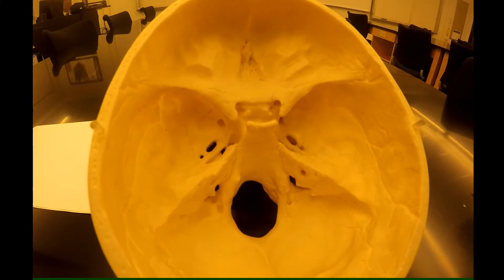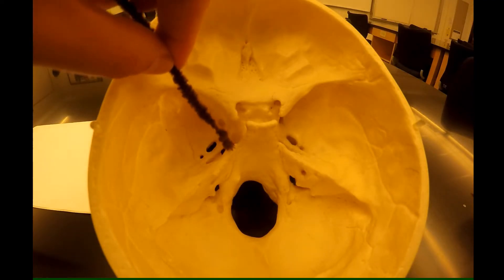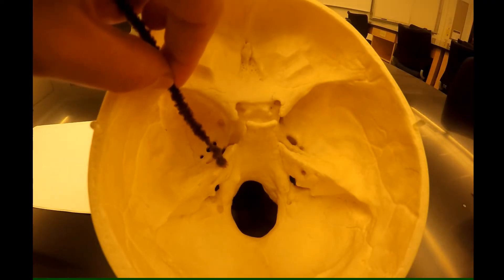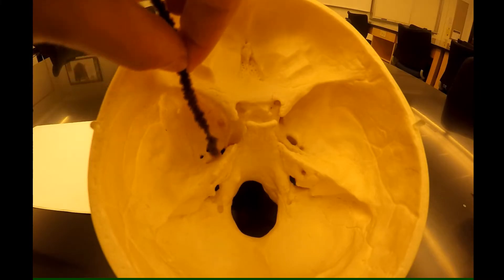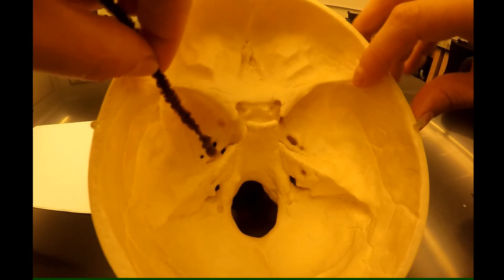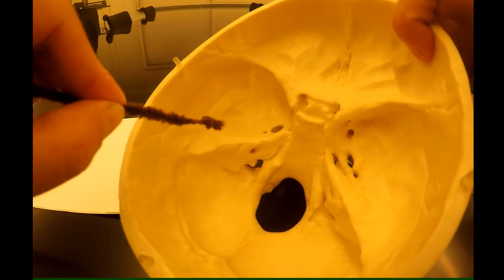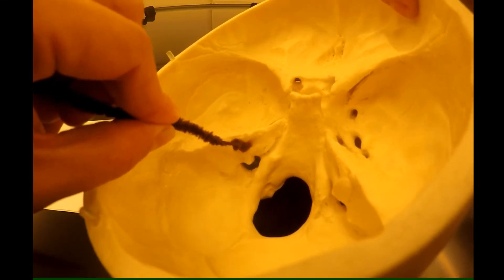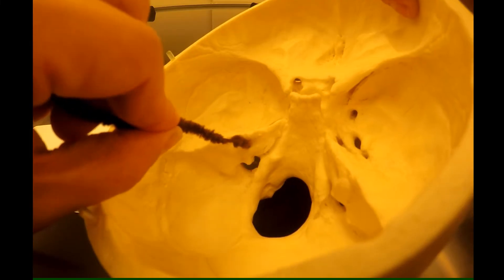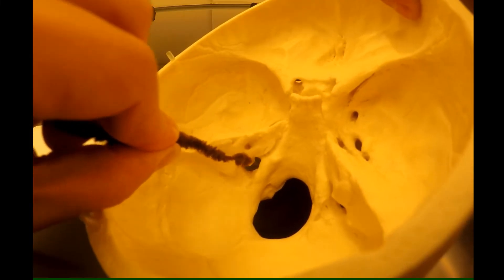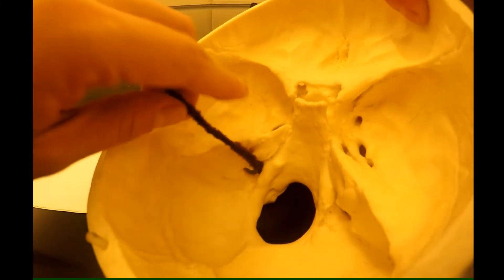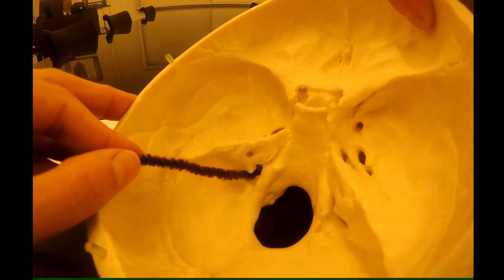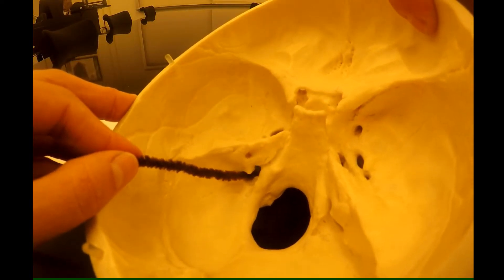After you find your foramen lacerum, you go over the mountain and the first thing you come across is the internal acoustic meatus. Then you continue down the mountain and you find your jugular foramen.